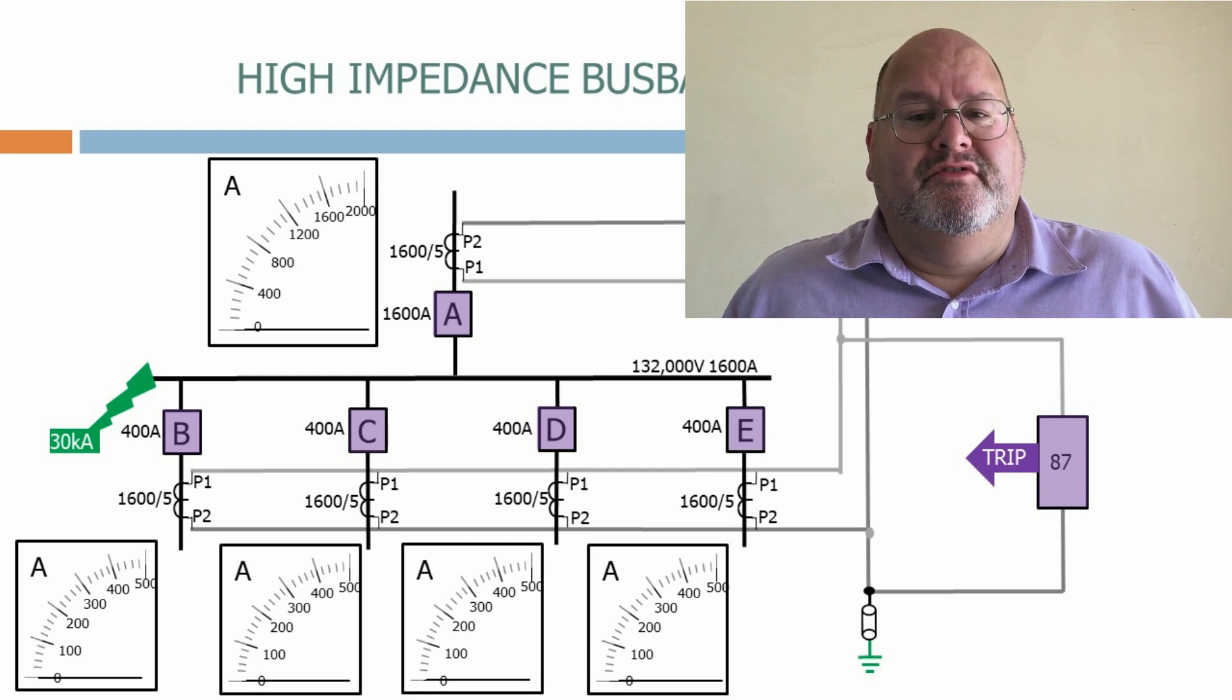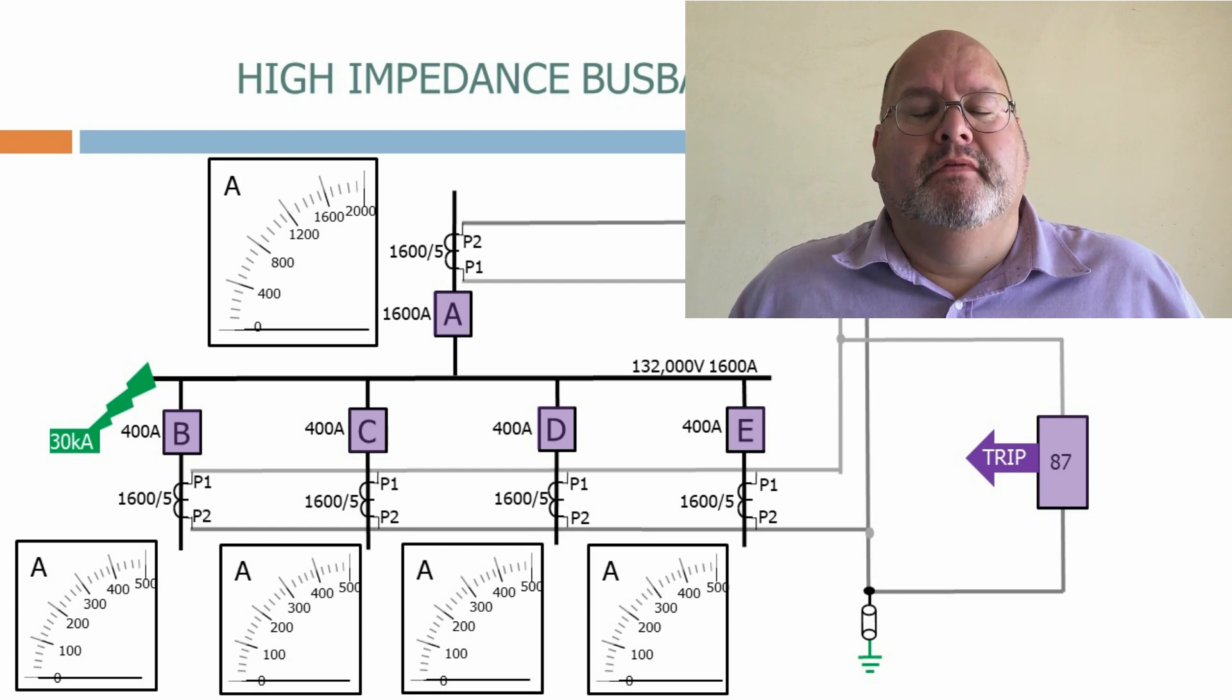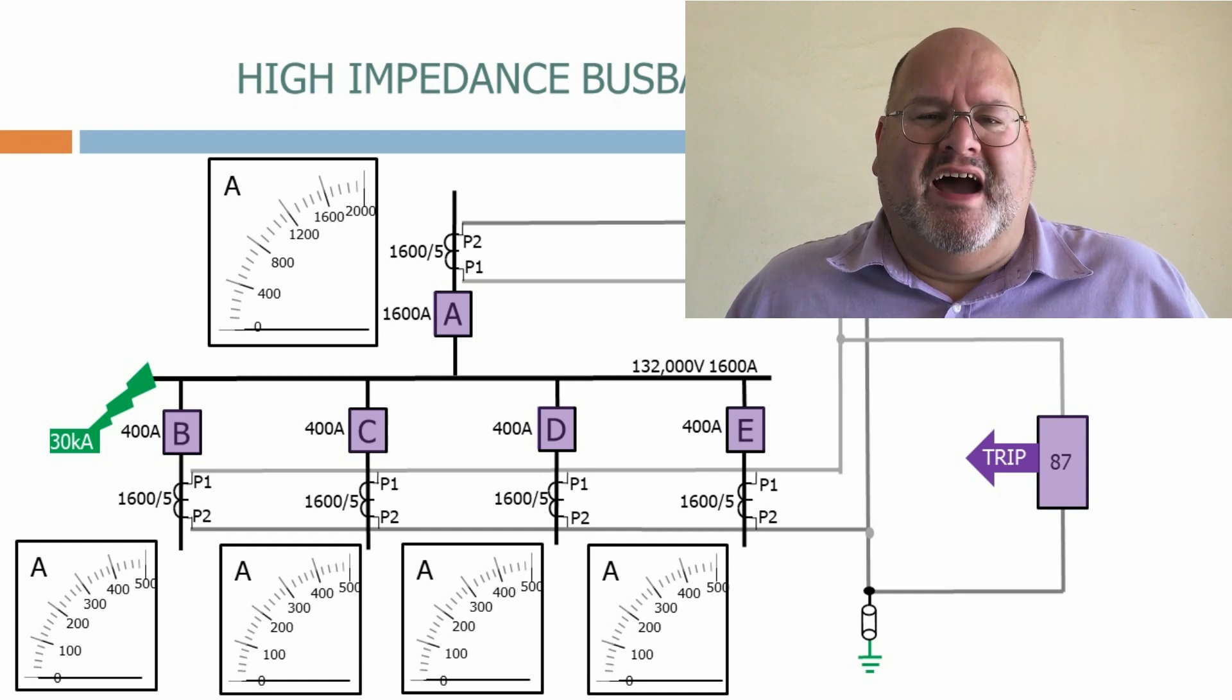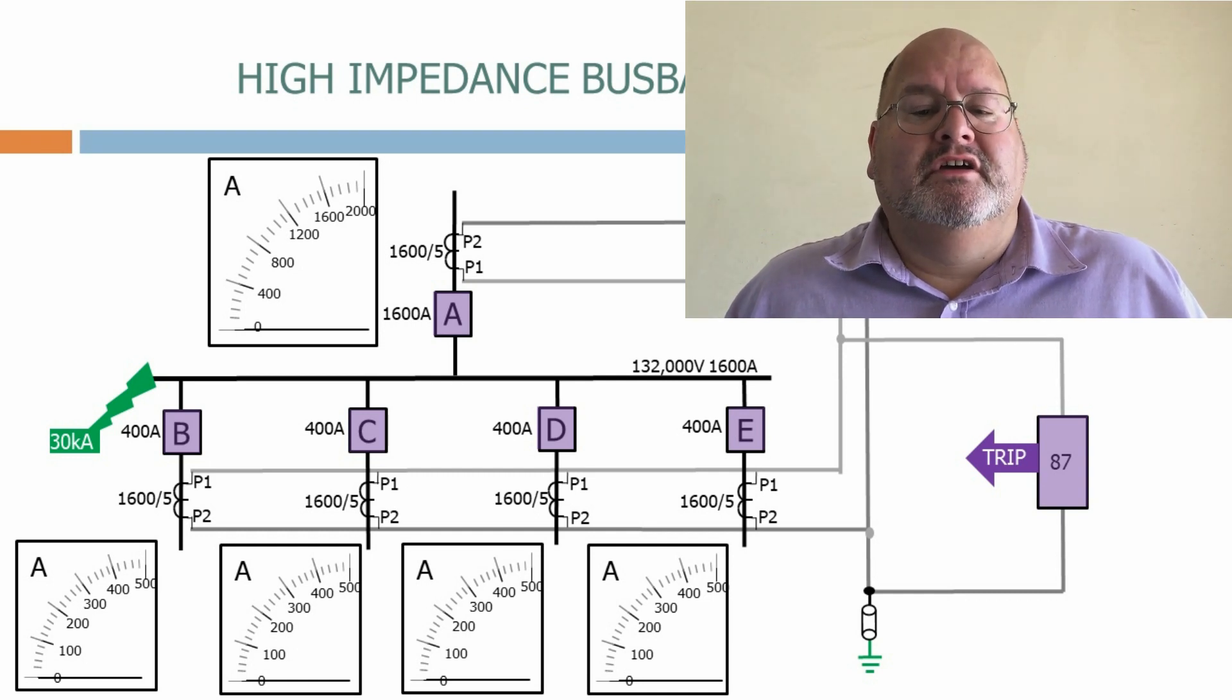The high impedance of the busbar relay forces all of the currents created by the current transformers to circulate between them. When the currents balance, the net output of this arrangement is virtually zero, even under through-fault conditions. During a fault condition, the currents cannot balance and the net current difference flows into the relay which then operates.